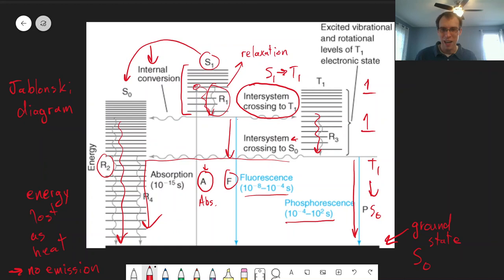Some of those produce light, fluorescence and phosphorescence. Some of them don't, through internal conversion or intersystem crossing back to the S0 state. And the specifics of this are going to be related to specific molecules.